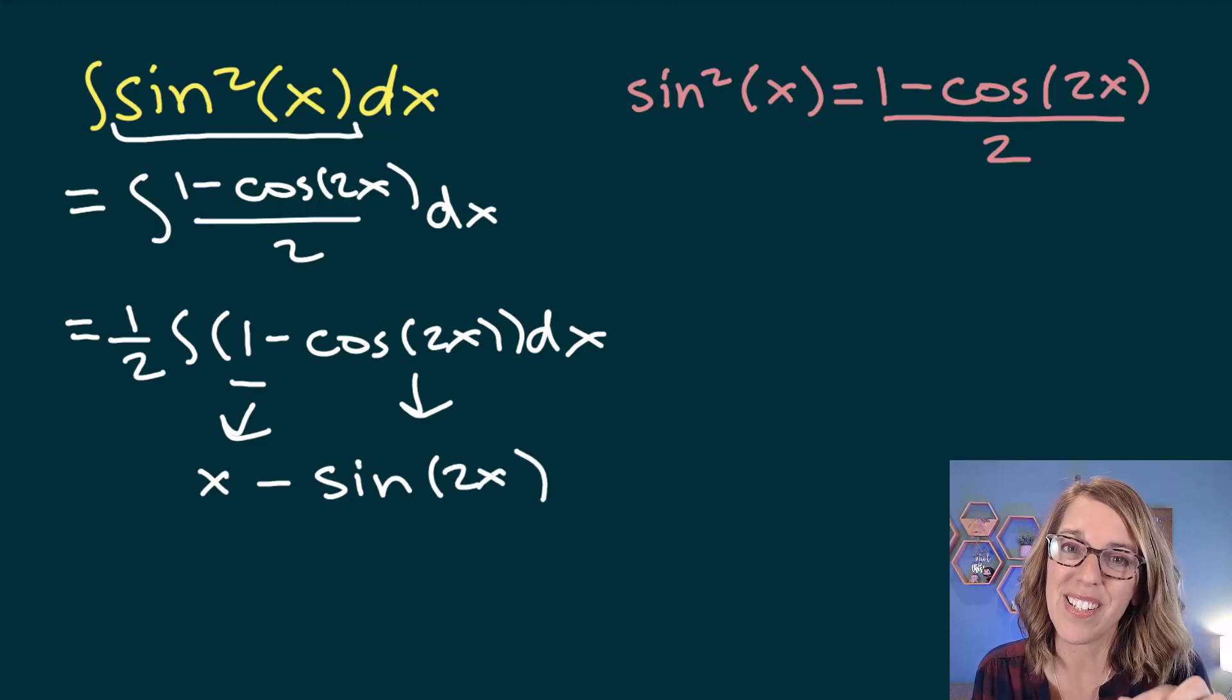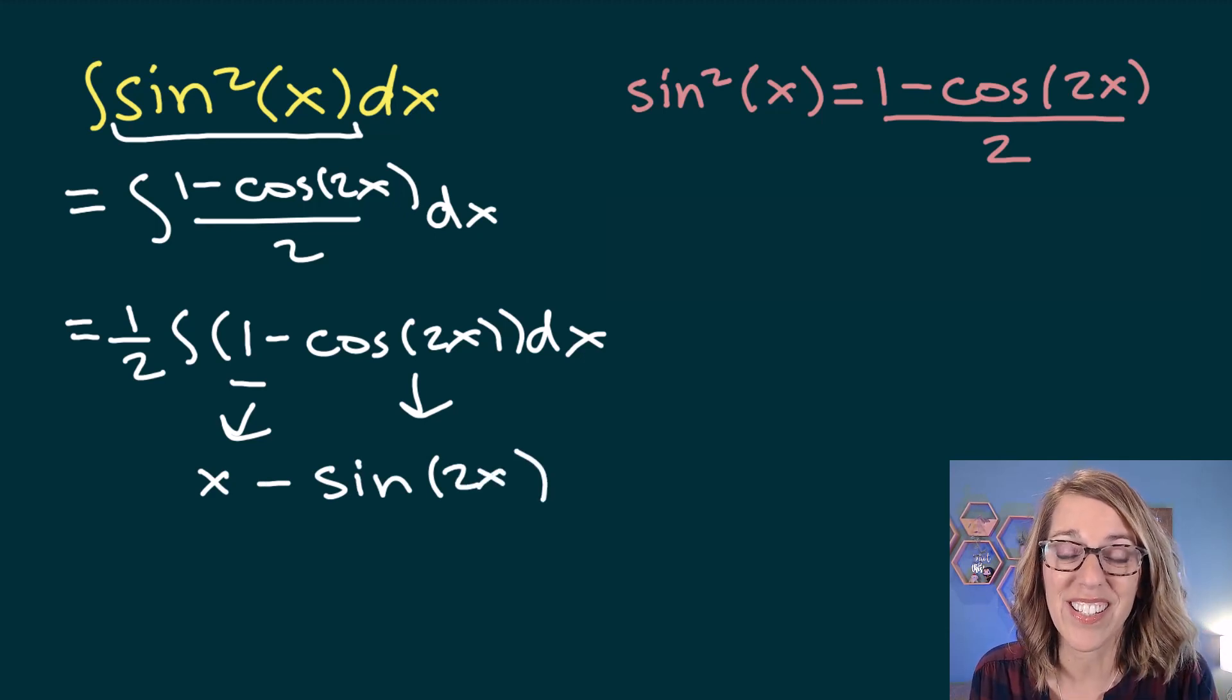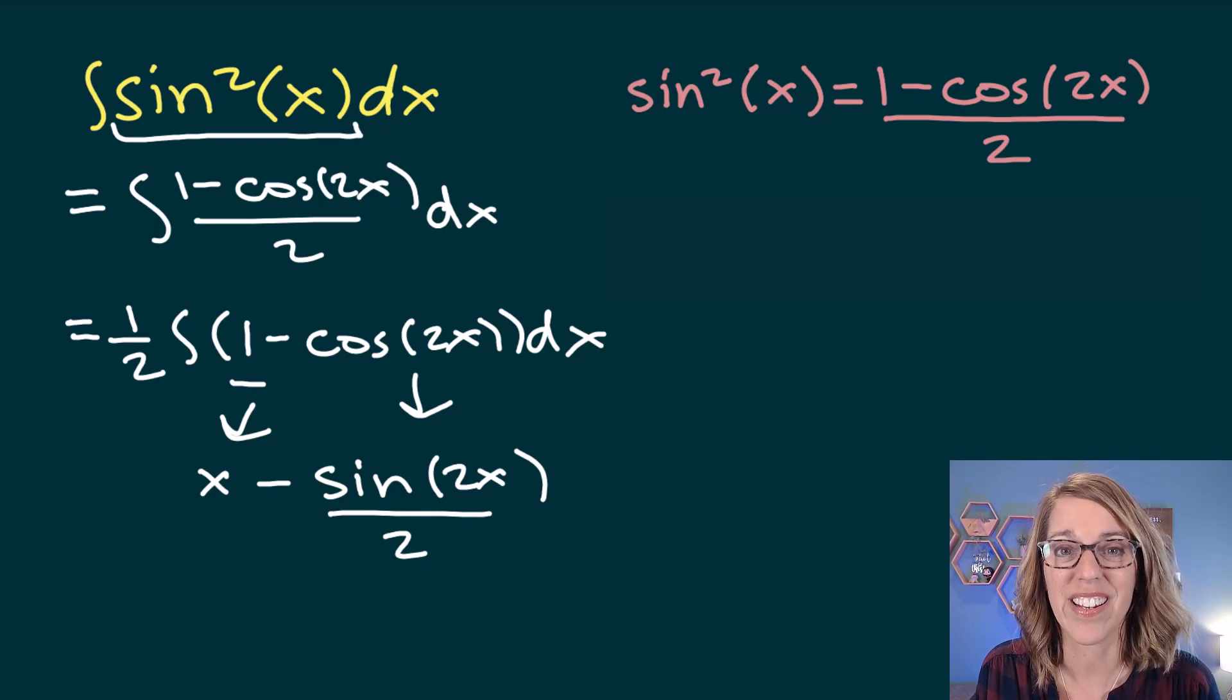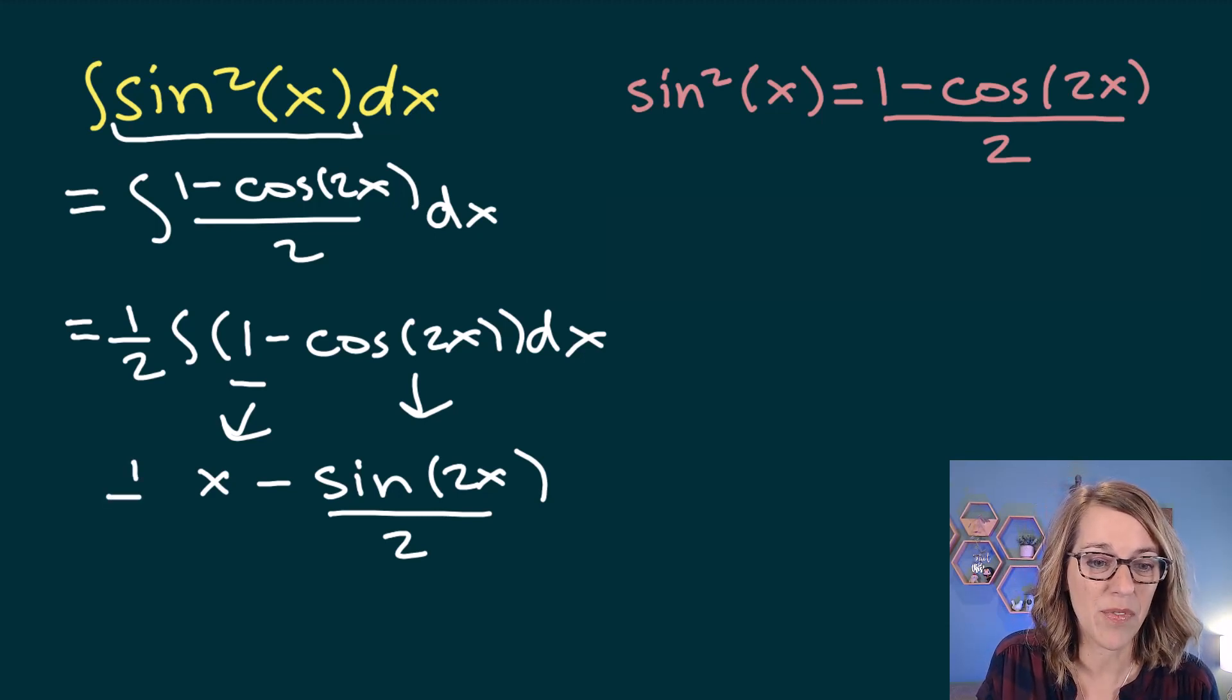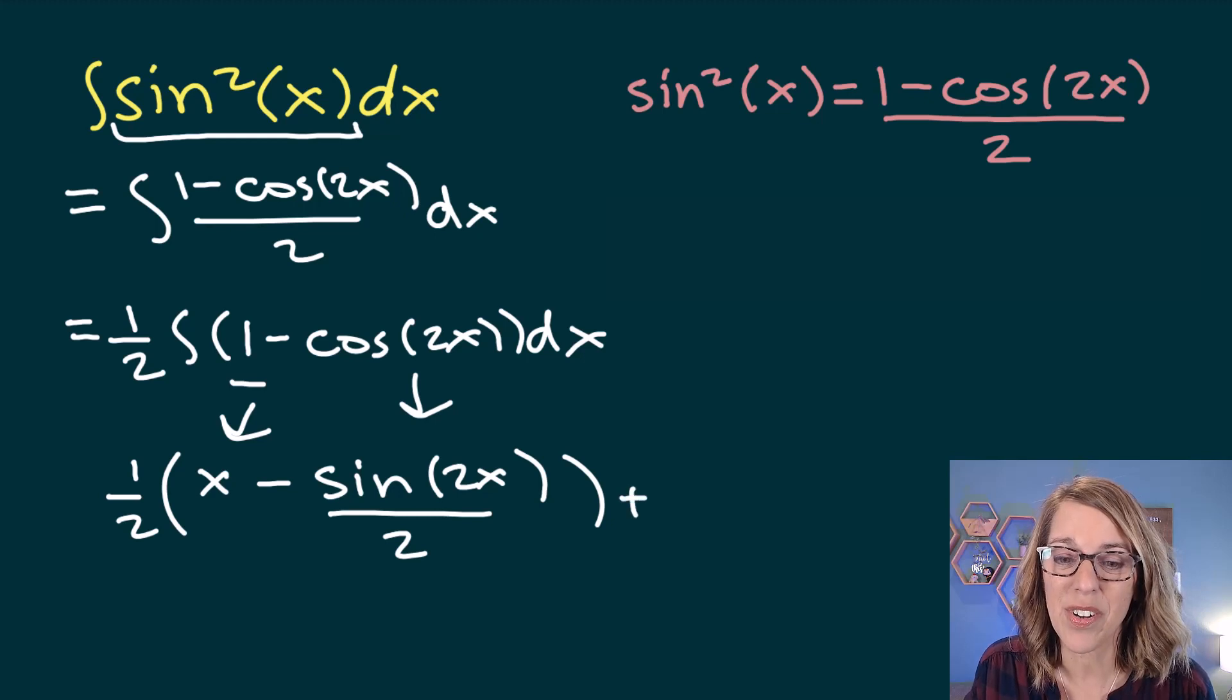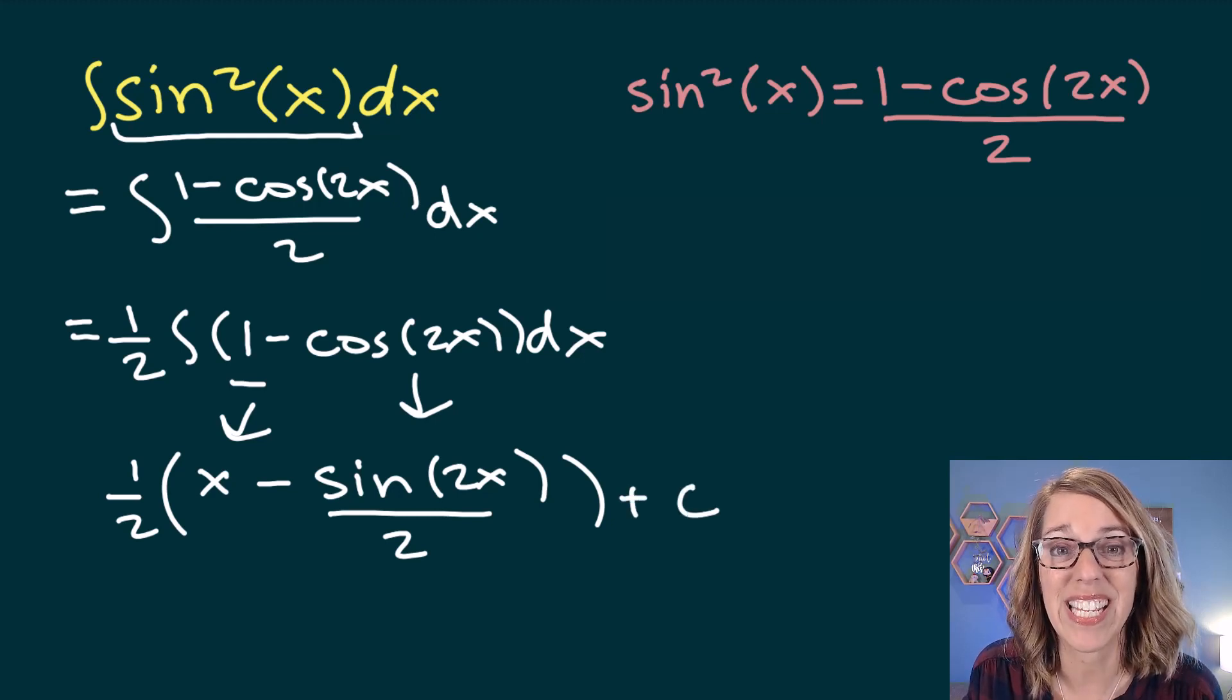Because I've got that constant multiplier 2 on the inside, we could use a u substitution, or we could go ahead and use this shortcut of dividing by a constant multiplier. So I've got that divided by 2. This is a 1 half out in front of everybody. This is an indefinite integral, so I'm going to add that plus c as well.